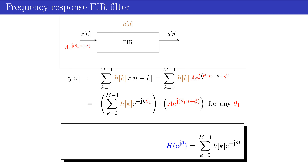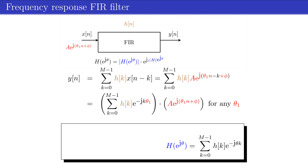In the follow-up video, we will show that the frequency response is a periodic function, and for this reason the function variable is not denoted by theta, but by e to the power j*theta. Because the frequency response is a complex function, we can write it in a polar way as the product of the magnitude — denoted by the absolute value of the frequency response — multiplied by a complex exponent containing the phase of the frequency response. Both magnitude and phase are functions of frequency theta.